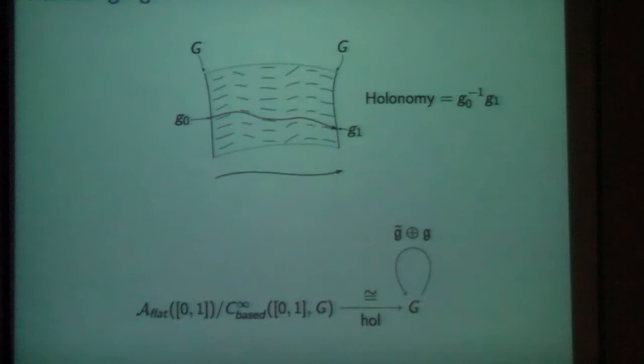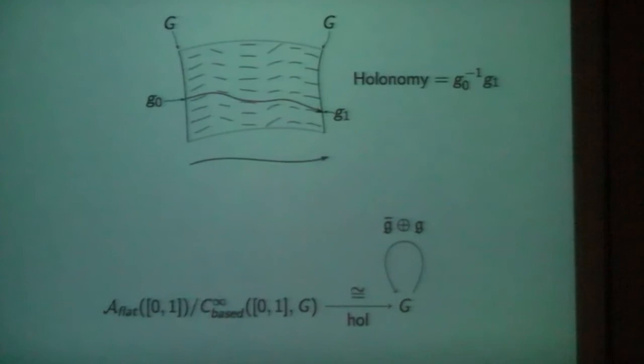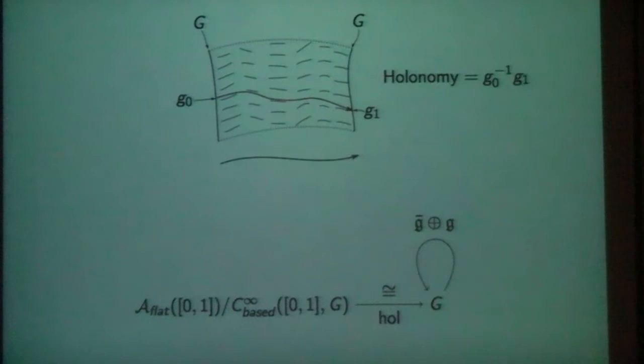This is the action of G cross G on the structure group G, one copy acting on the left and one copy acting on the right. Instead of looking at the group of residual gauge transformations, I could look at the Lie algebra of residual gauge transformations — this is the infinitesimal version. So from now on I'm going to just keep working infinitesimally and look at the Lie algebra. This residual gauge Lie algebra is two copies of the Lie algebra, one acting on the left and one acting on the right.